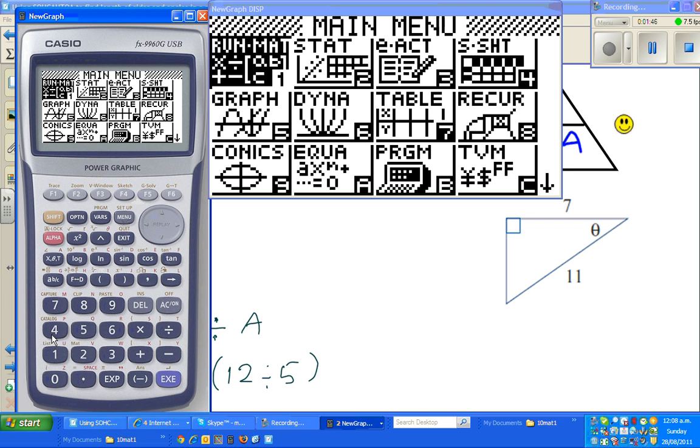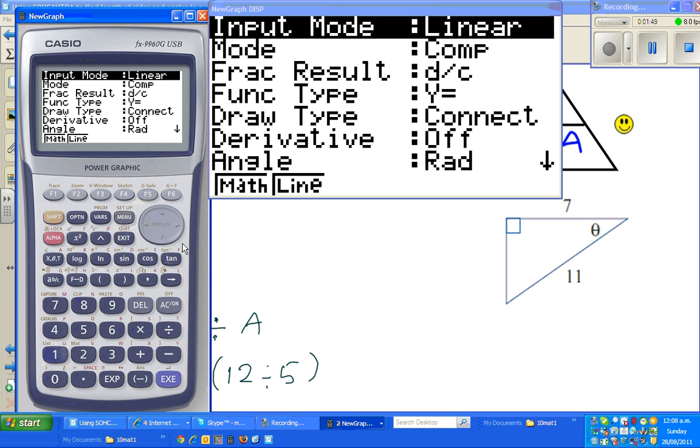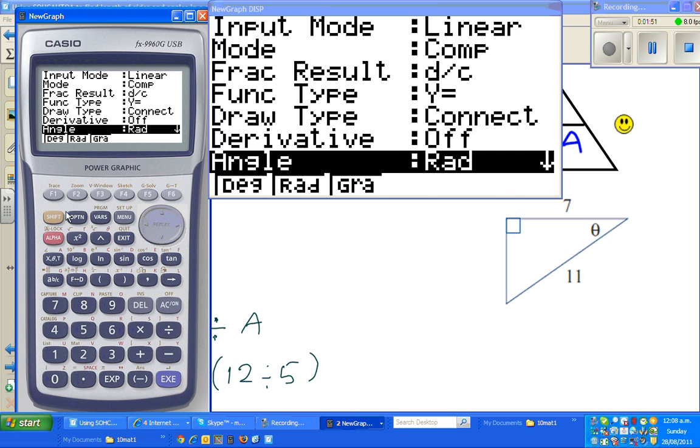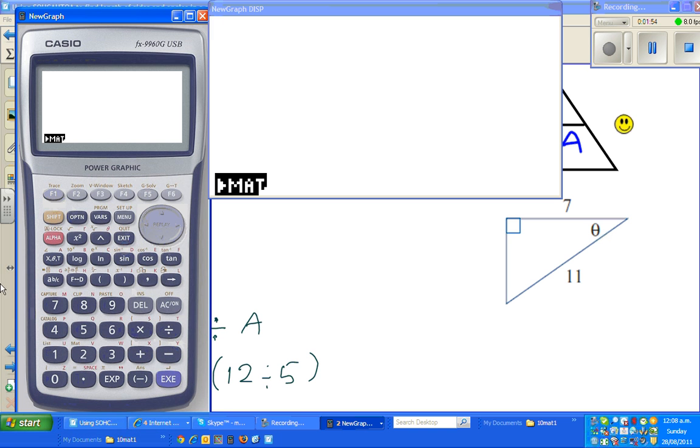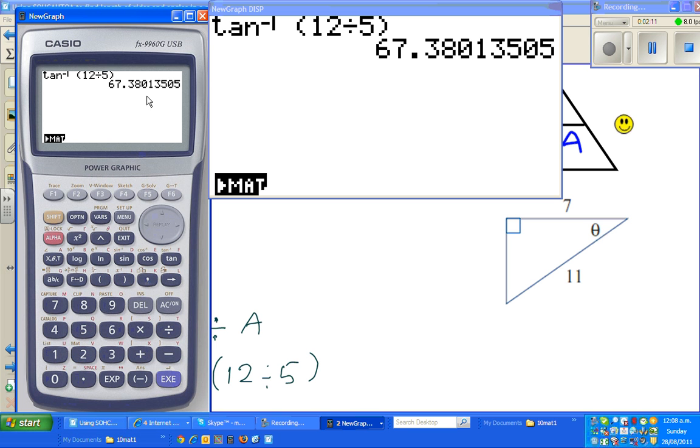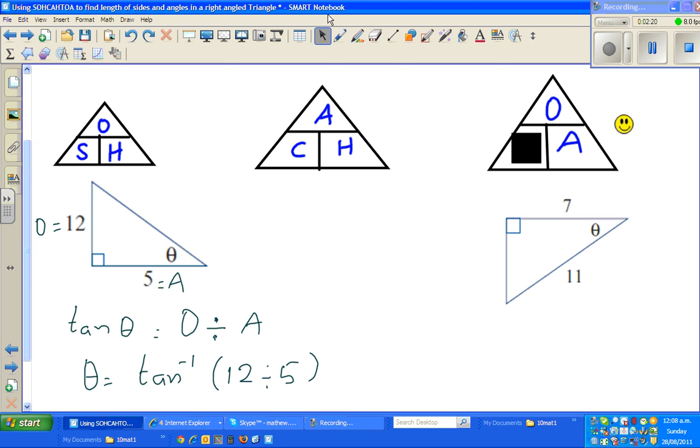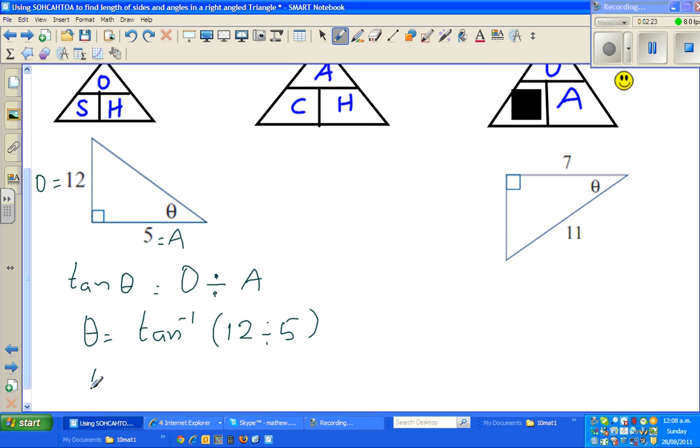So get your calculator out. I will change to degrees. Always good to check whether your calculator is in degrees or radians. Radians you will learn later on. So it is shift tan bracket 12 divided by 5, close the bracket. It is 67 degrees. You want to round it to the nearest degree. So it is 67.3. Rounding to the nearest degree will be 67 degrees. This theta is 67 degrees.